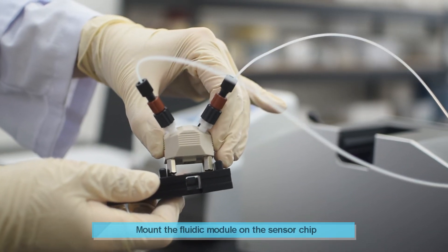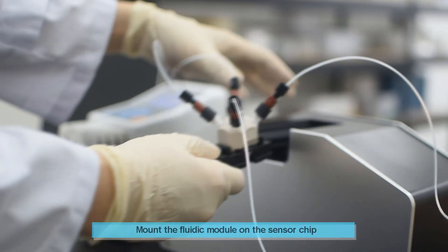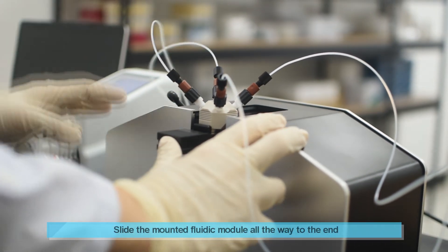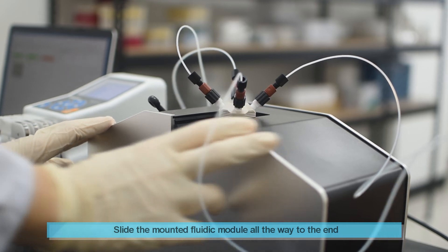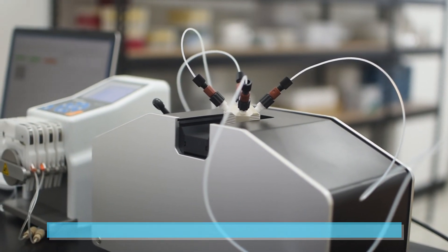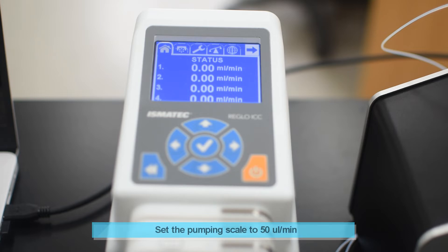Mount the fluidic module with the prism holder. They are simply connected by a magnet. Align the rail groove of the prism holder and the rail of the instrument. Insert the holder all the way to the end. Turn on the pump with a flow rate of 50 µL per minute.